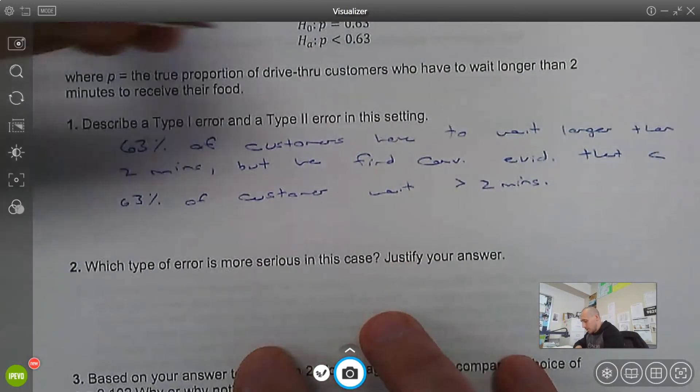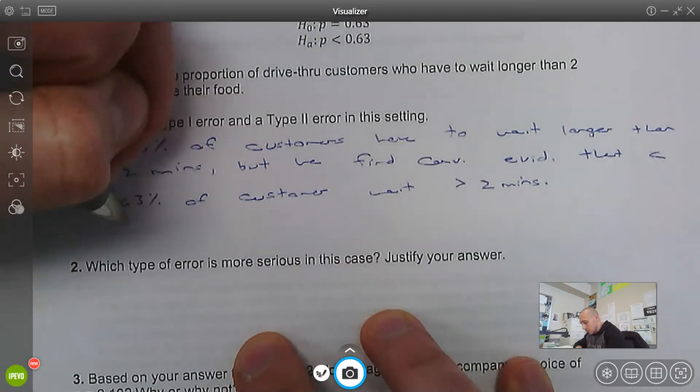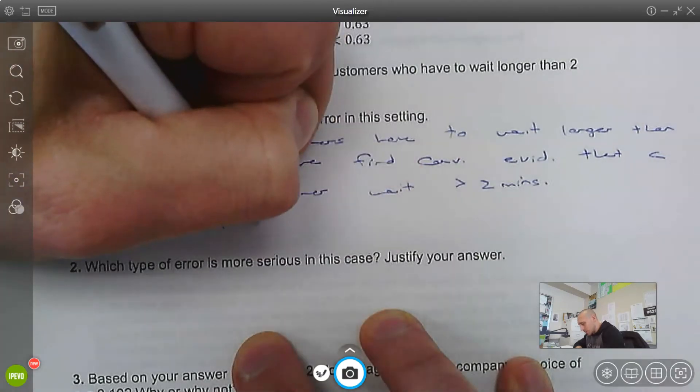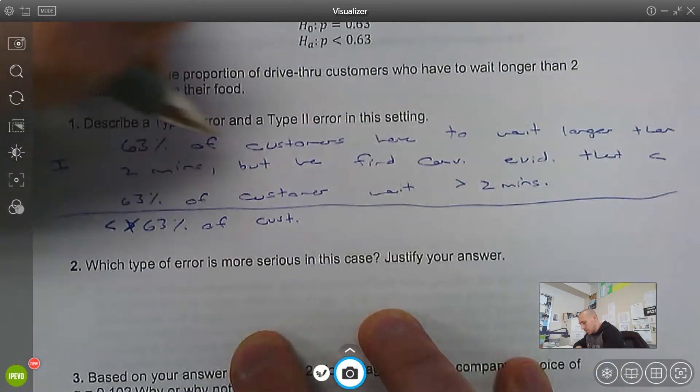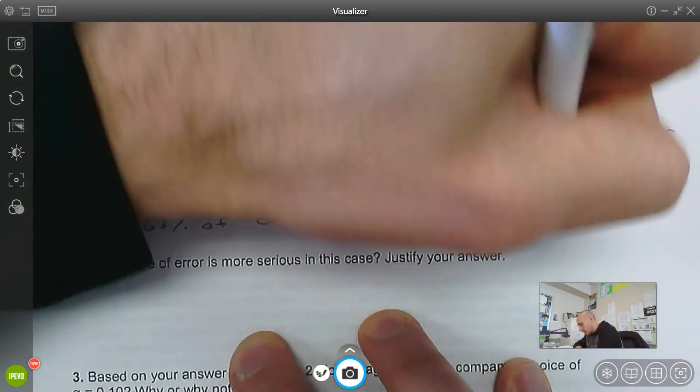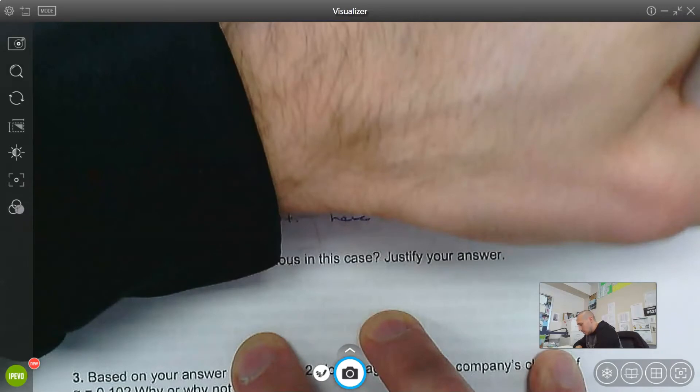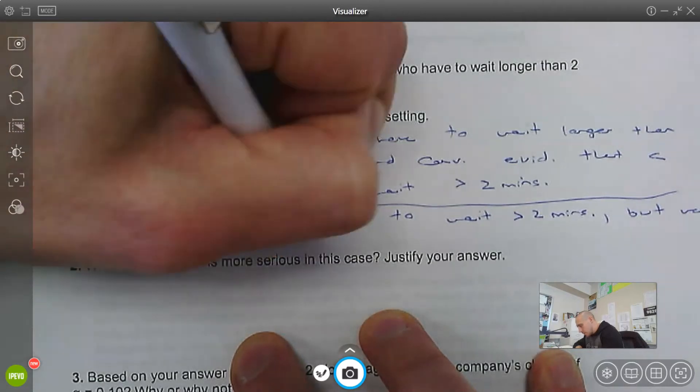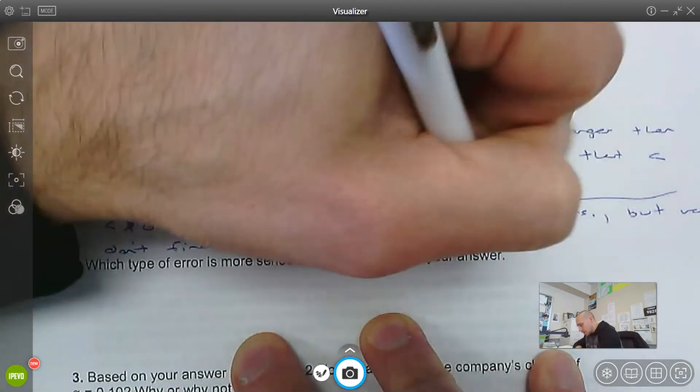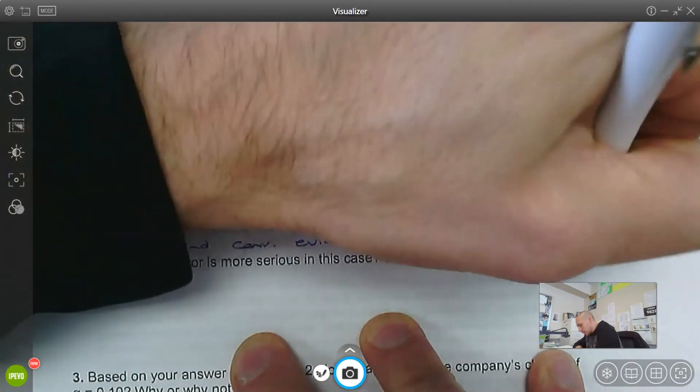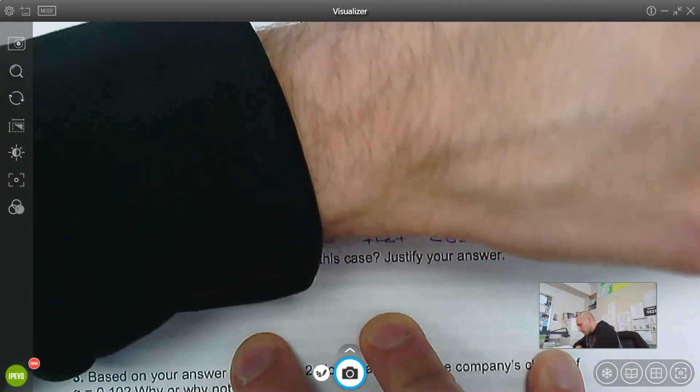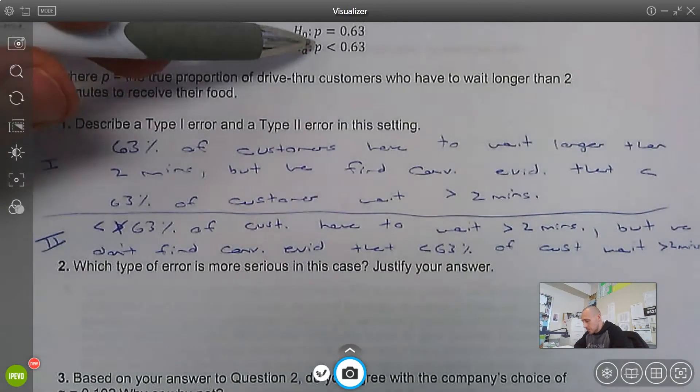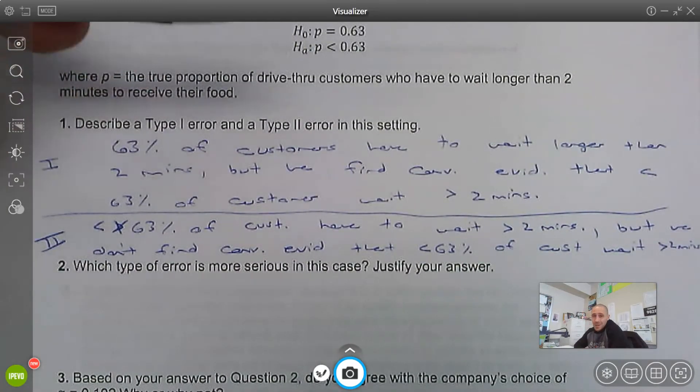Type 2 error. This is the alternative is true. So less than 63% of customers have to wait greater than two minutes. But we don't find convincing evidence that less than 63% of customers wait over two minutes. So that's a Type 2 error. The alternative is true. Less than 63% of their customers had to wait longer than two minutes, but we didn't find enough evidence for that.